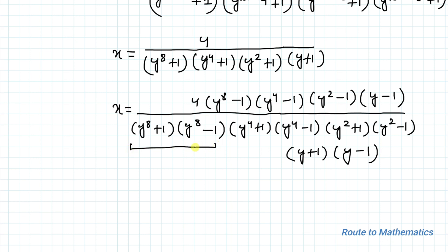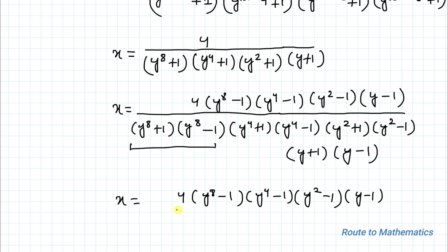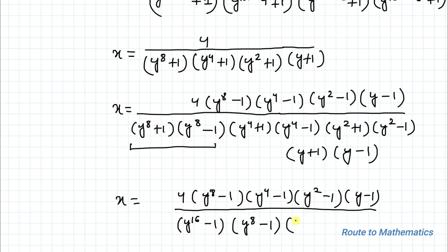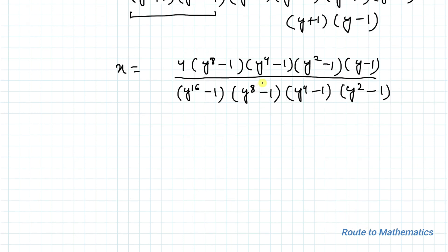Now we apply the algebraic identity (a + b)(a − b) = a² − b². Applying this in the denominator: (y^8 + 1)(y^8 − 1) = y^16 − 1, then (y^4 + 1)(y^4 − 1) = y^8 − 1, then (y^2 + 1)(y^2 − 1) = y^4 − 1, and (y + 1)(y − 1) = y^2 − 1. The common factors (y^8 − 1), (y^4 − 1), and (y^2 − 1) cancel out from numerator and denominator.